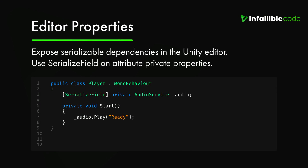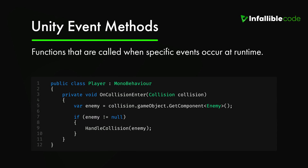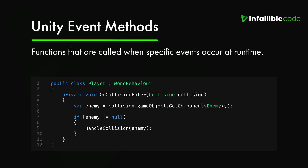Editor properties are like public properties except they're much safer and quite frankly much nicer to use. Unity automatically exposes public serializable fields right in the editor so you can set them yourself. Best of all, Unity even exposes private variables marked with the SerializeField attribute in the same way — personally I find this method preferable to just making a field public. Lastly, Unity event methods are functions called when specific events occur at runtime. They can be used to resolve dependencies whenever those events are triggered, such as using OnCollisionEnter to get a reference to another game object and search for dependencies using GetComponent.